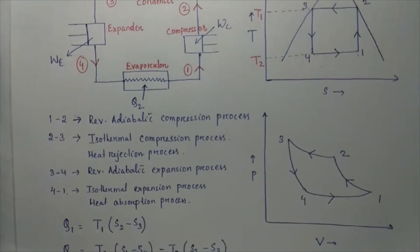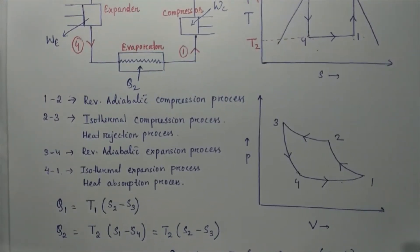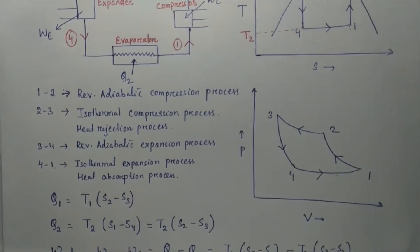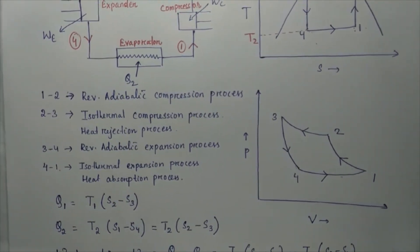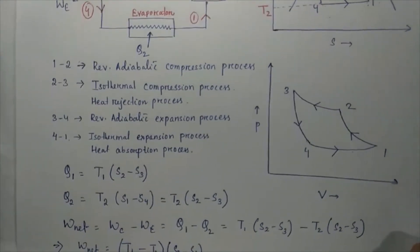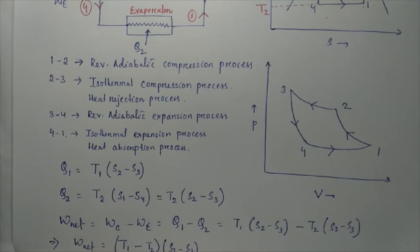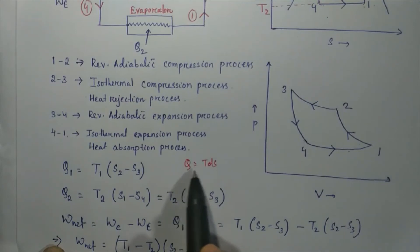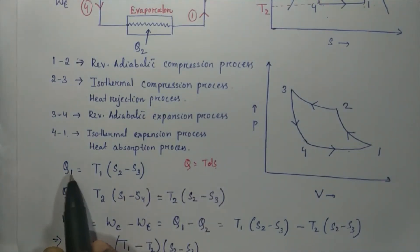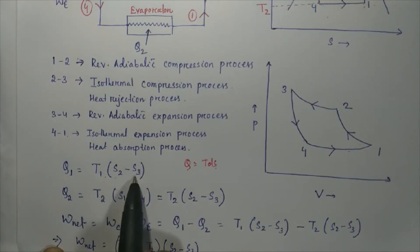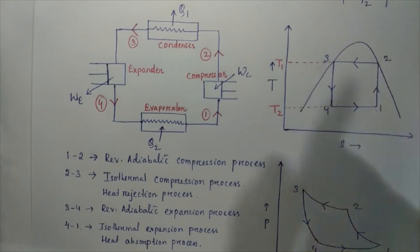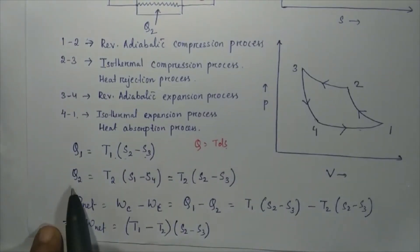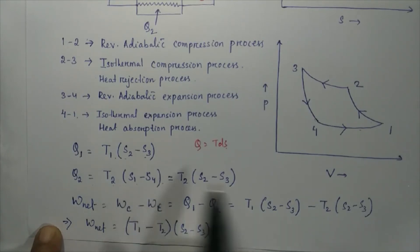To measure the coefficient of performance for the reversed Carnot cycle, we need the magnitudes of Q1 and Q2 — the heat addition and heat rejection — and the net work supplied to the system. Using Q = T·dS, we get Q1 = T1 × (S2 − S3).